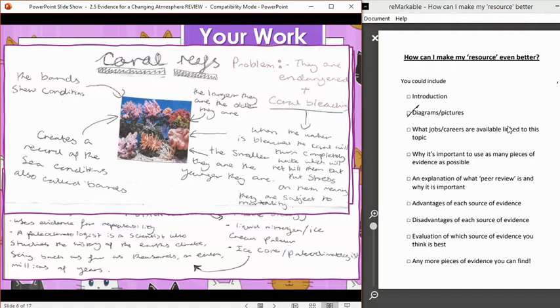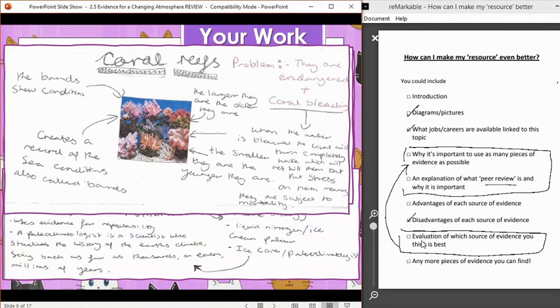So this piece of work is already incredibly strong. They've got diagrams and pictures. They've got jobs and careers linked to it. They've given some disadvantages of the pieces of evidence. So they've already ticked off three big sections here in how can they make their resource even better. It might be nice to improve this one further if they include a little evaluation at the end where they say which source of evidence they think is best, but then justify it in terms of, actually, it's more important to use lots of pieces of evidence together and then talk about ruling out bias and potentially mention peer review.